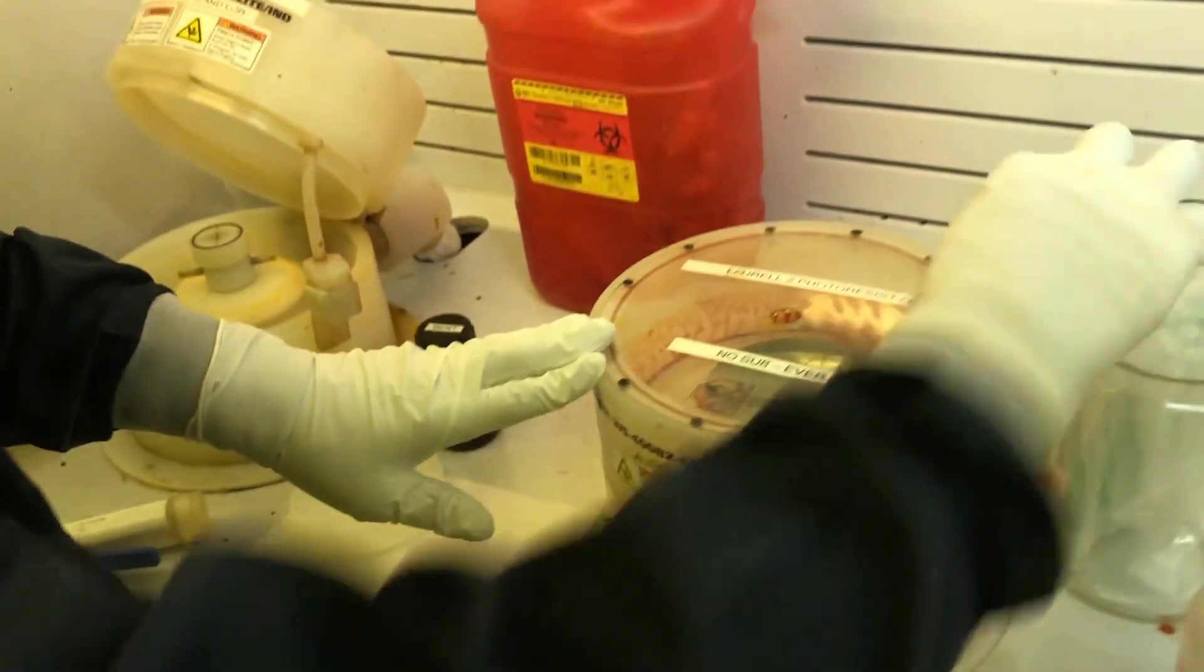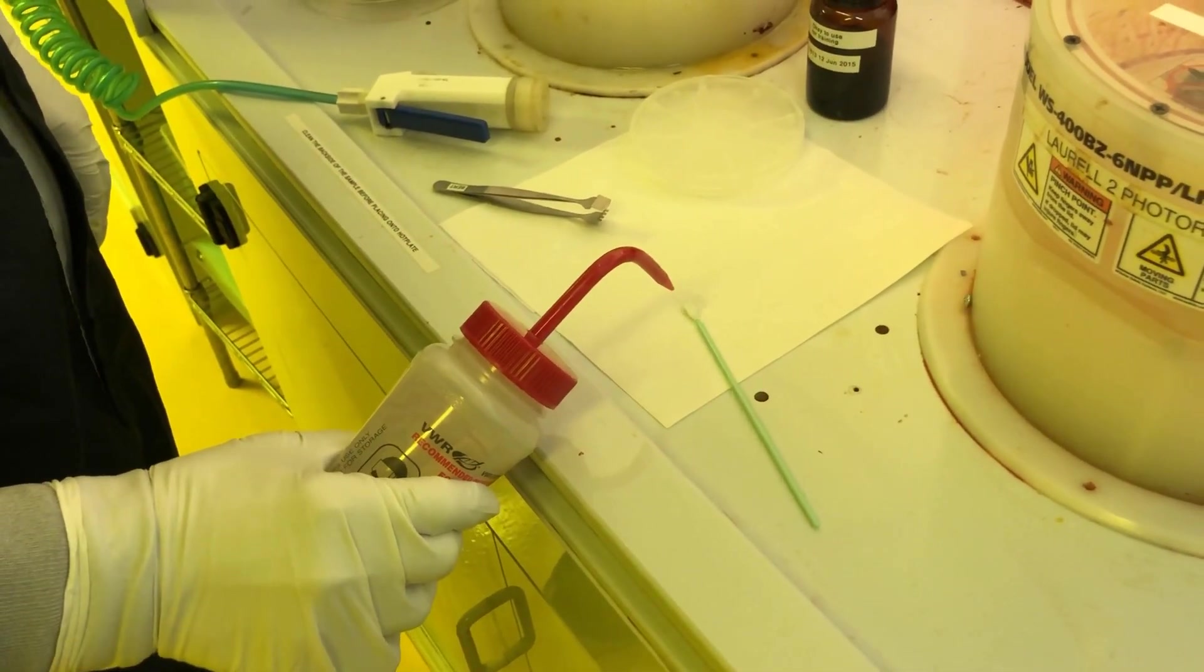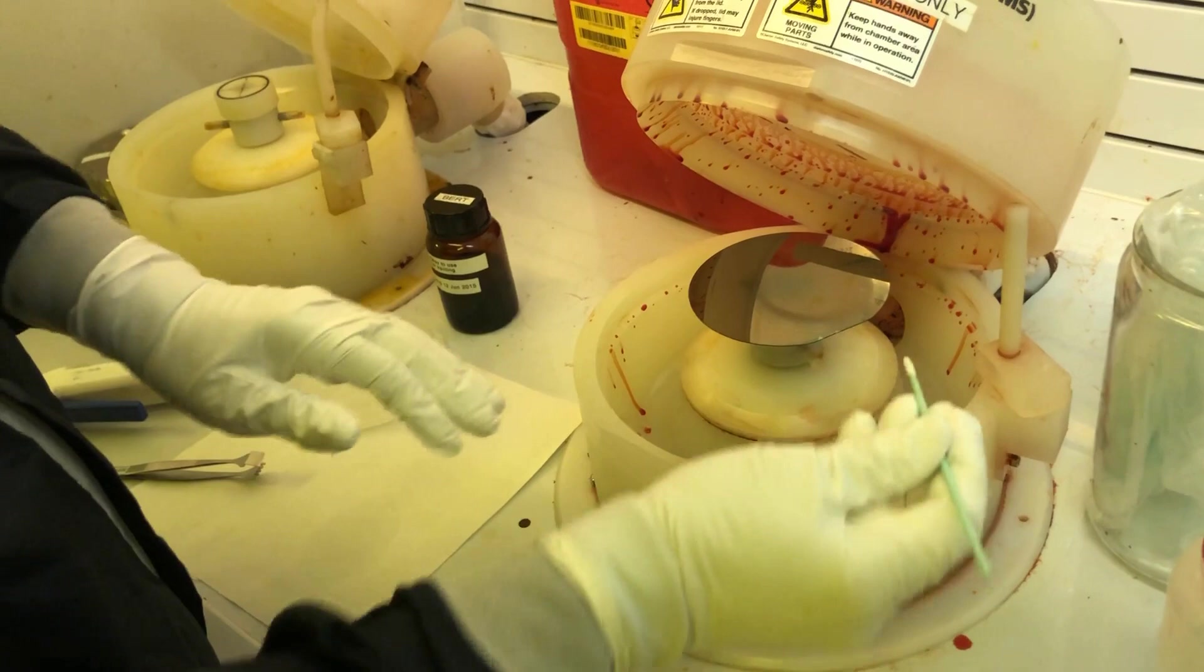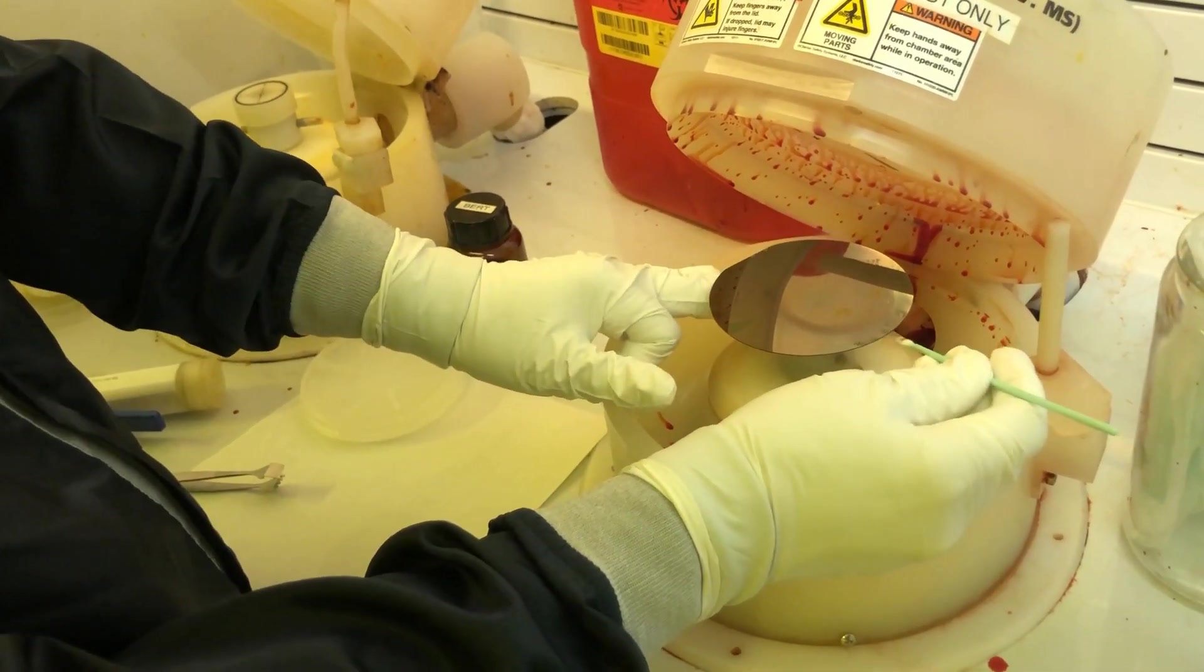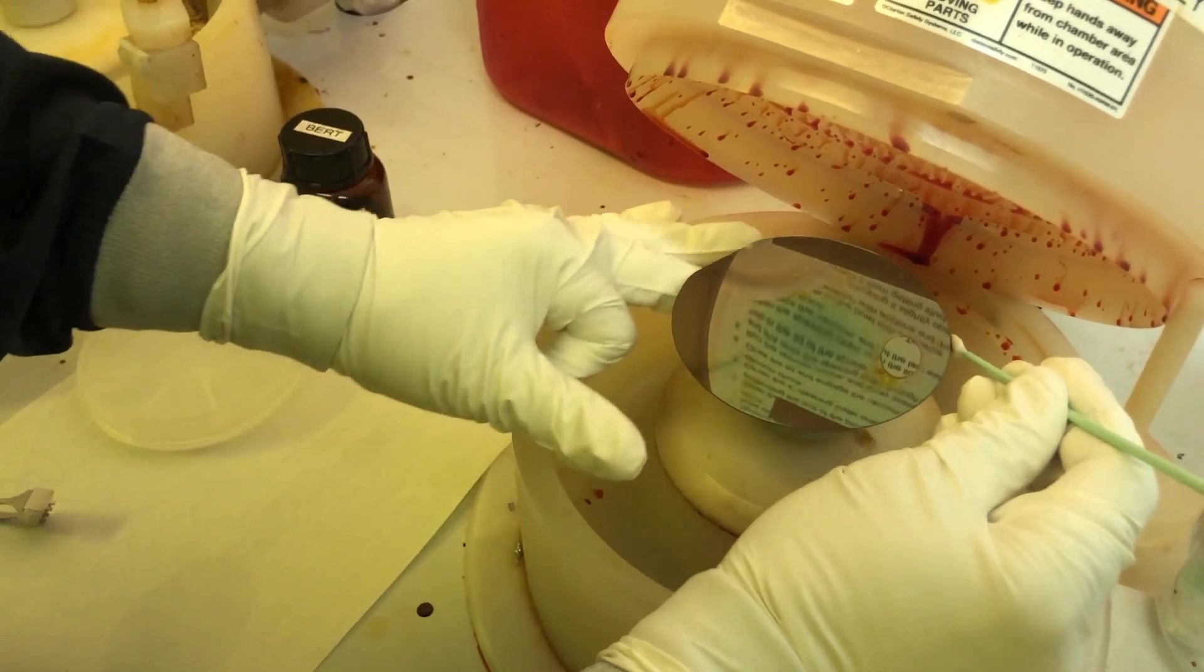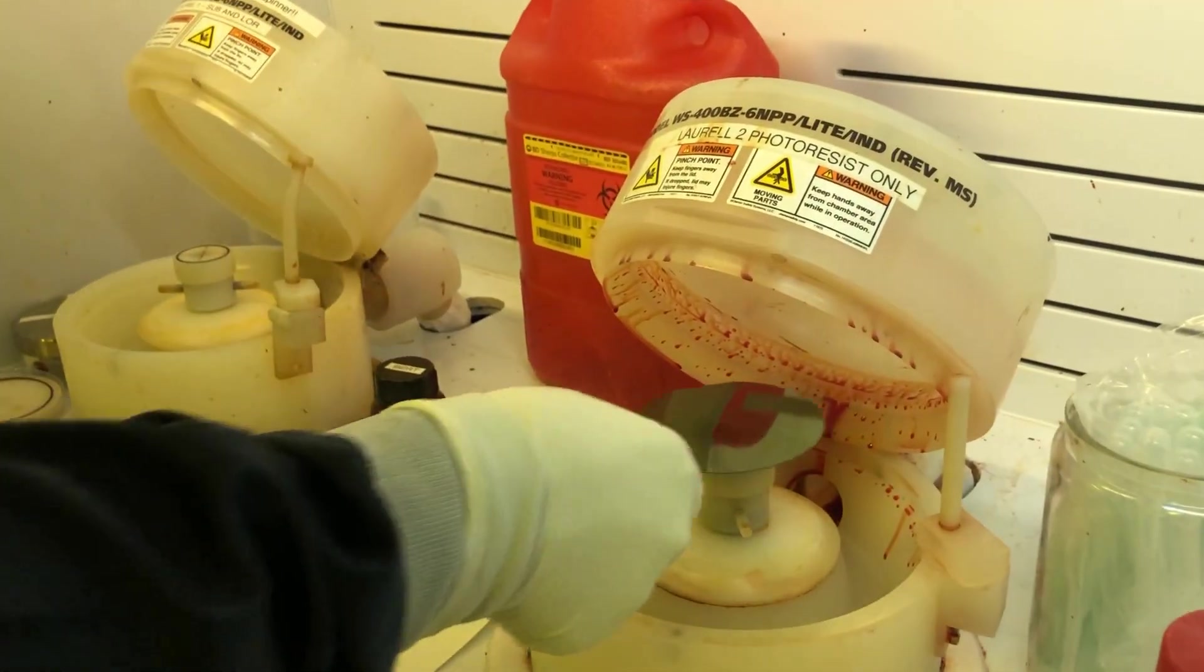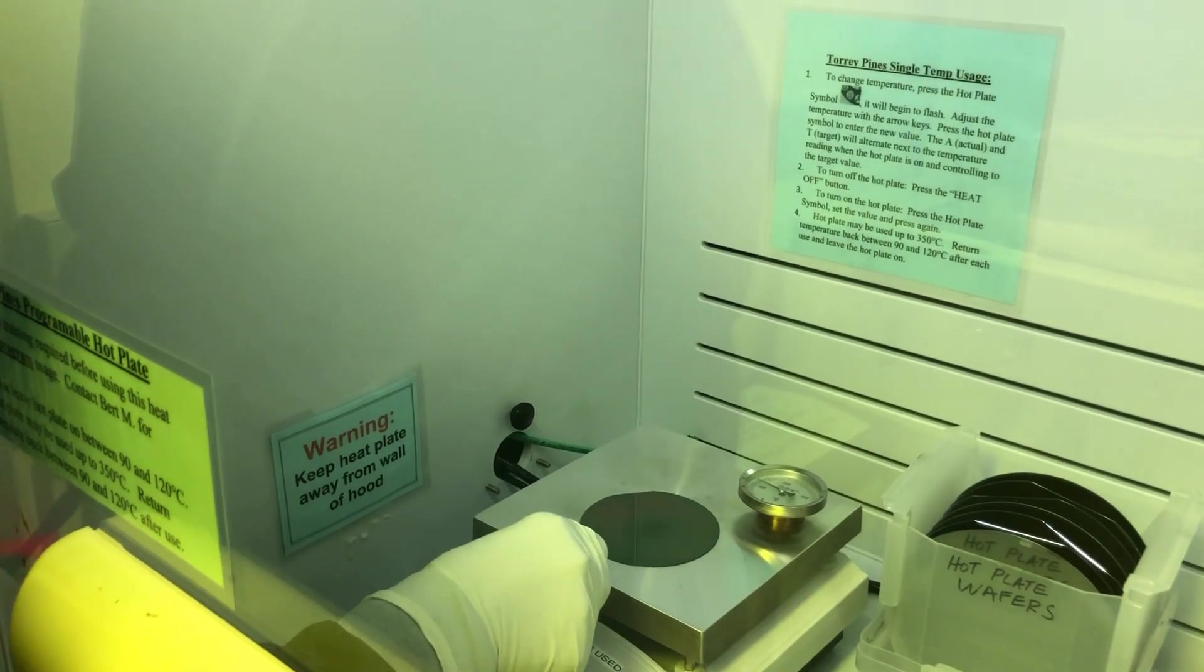Once your sample has stopped spinning, you'll want to remove the edge bead or EBR. Apply some solvent to the end of your swab. Dab the swab so the excess acetone has been removed. Start at the bottom of your sample. Then move to the edge. Turn off your vacuum. Remove your sample. Post-bake your sample at the proper temperature and time.